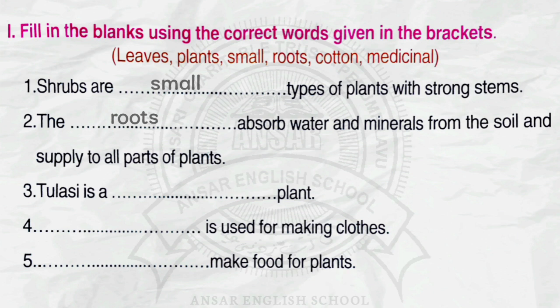Number 3. Tulasi is a dashed plant. Answer: medicinal. Number 4. Dash is used for making clothes. Answer: cotton. Number 5. Dash make food for plants. Answer: leaves.